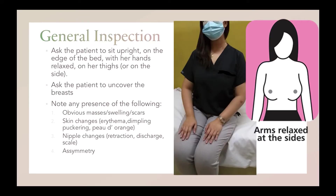For the general inspection, ask your patient to sit upright on the edge of the bed with her hands relaxed and placed on her thighs or on the side. Ask your patient to uncover her breast and note for the presence of any of the following.